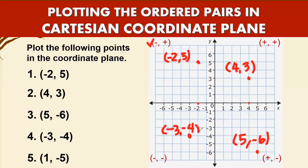The last one is one, negative five. Go to your right with one, then go down to negative five. Your point is one, comma negative five. I hope you now know how to plot points in the Cartesian coordinate plane. Thank you for watching.